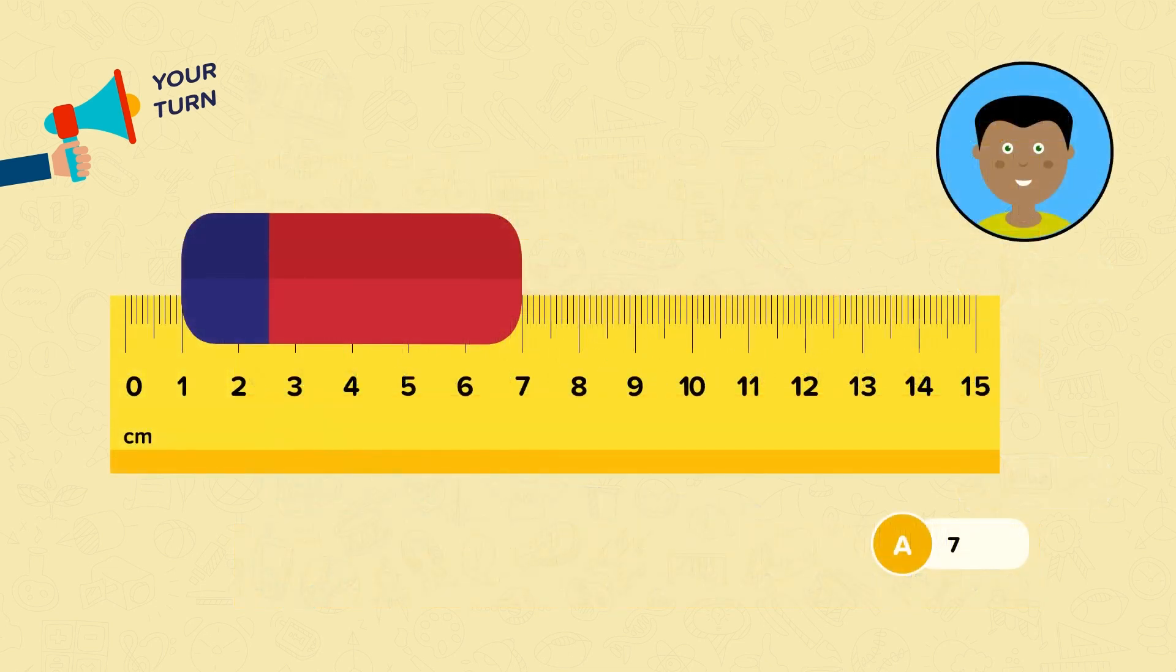Now for one final question. Marcel has measured the rubber and written down his answer. Can you spot two mistakes that he has made? Pause the video and have a think.